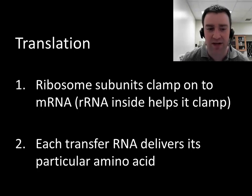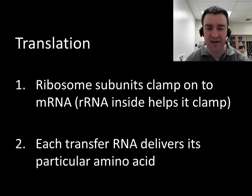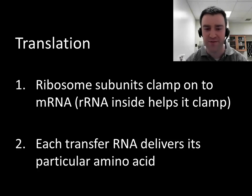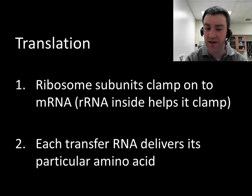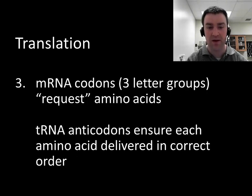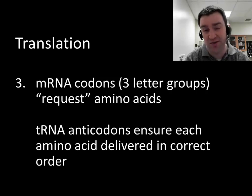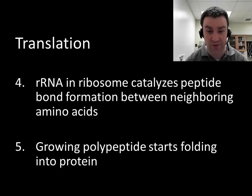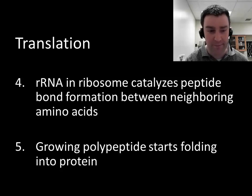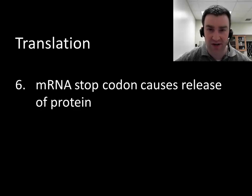To summarize: you need to be able to tell me the roles of messenger RNA, ribosomal RNA, and transfer RNA. You want to know who has the codons — that's messenger RNA — and who has the anticodons — that's transfer RNA. We call it transfer RNA because it transfers amino acids to the ribosome, and the ribosome puts them together with the rRNA that makes it up. A stop codon is what causes the process to finish.